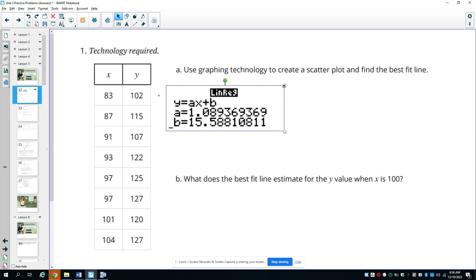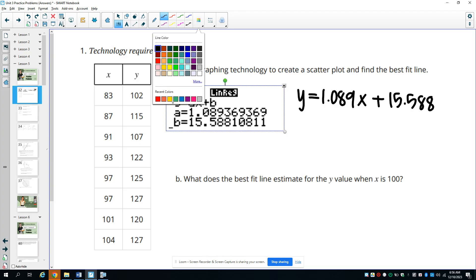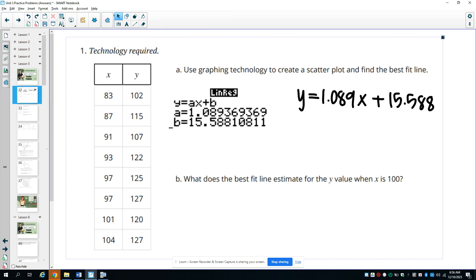So they give you this equation, y equals ax plus b. So y equals, and then you plug in your a, and the a is 1.089. So you can put 1.089x plus b is 15.588. So you just plug those in for a and b. So this a is here, and the b is here.